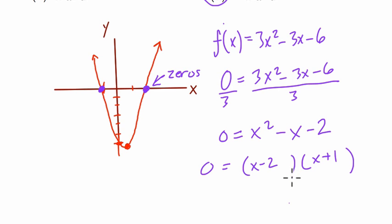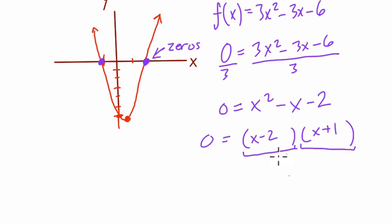we have a product. That means we're multiplying this value with this value. We're multiplying x - 2 and x + 1, and the result is zero. And the only way for that to happen, to get a product of zero, is if the first number is zero, or the second number is zero, or both numbers are zero.